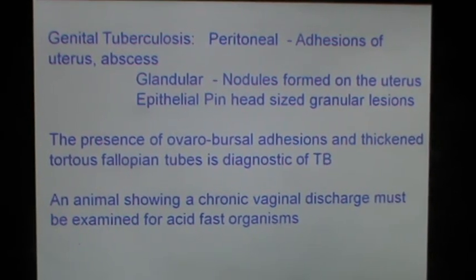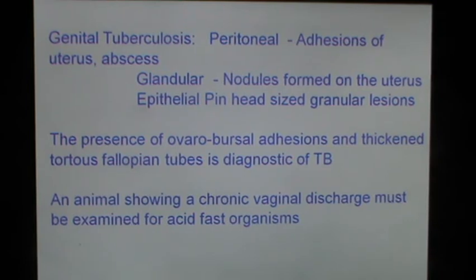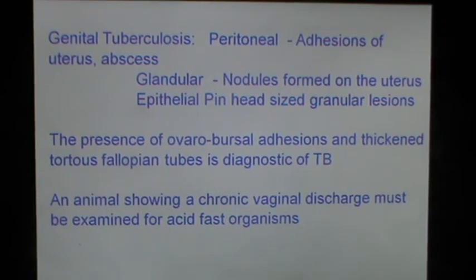Genital tuberculosis causes peritoneal adhesions of the uterus, presence of multiple nodules on the uterus, formation of abscesses, pinhead-size granular lesions, and the presence of ovarial and bursal adhesions and thickened tortuous fallopian tubes — these are diagnostic of genital tuberculosis. The organism can be cultured and a definitive diagnosis established. An animal showing a chronic vaginal discharge must be examined for acid-fast organisms and suspected for genital tuberculosis.